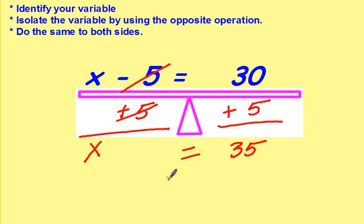Putting it equal. So x equals 35. You can check by sticking it back in the original equation. 35 minus 5 does equal 30.